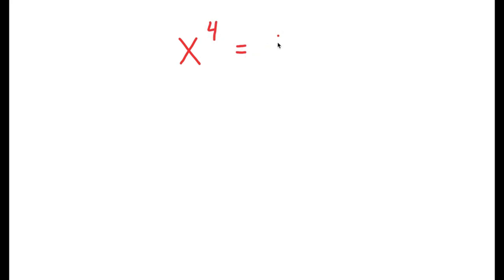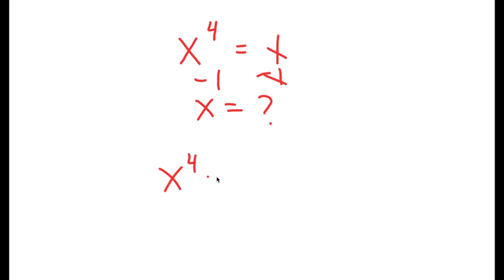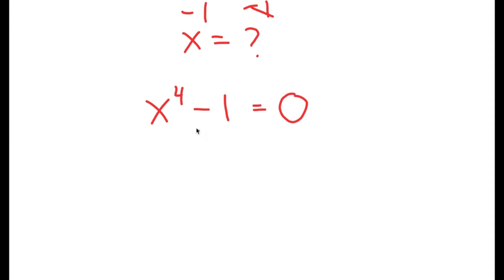In this video I'm going to solve the equation x to the power of 4 is equal to 1. To find the value of x, I'm going to subtract 1 on both sides, so I get x to the power of 4 minus 1 is equal to 0.